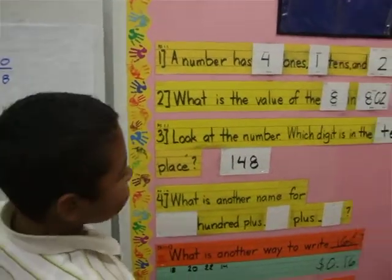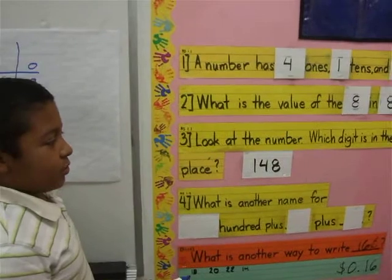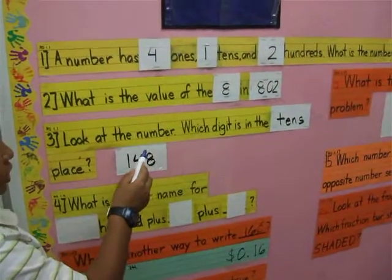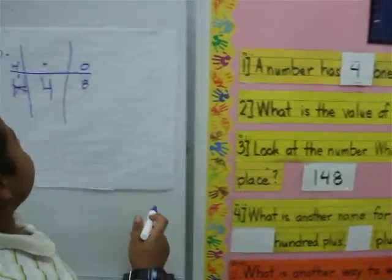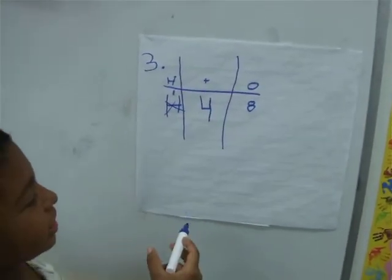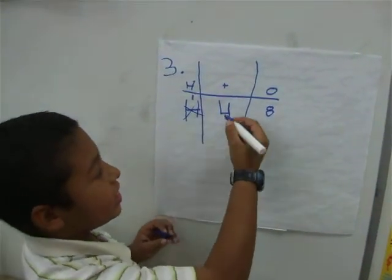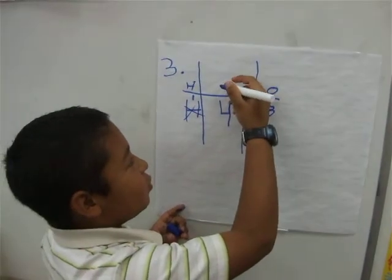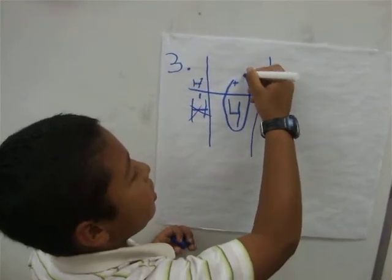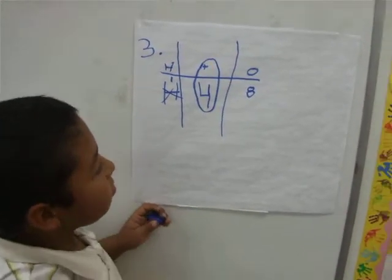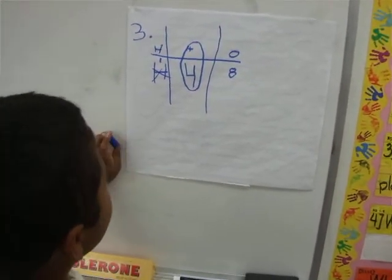And read the one that says which digit is in the 10's place. And you lift where the T is. So that means 10's.